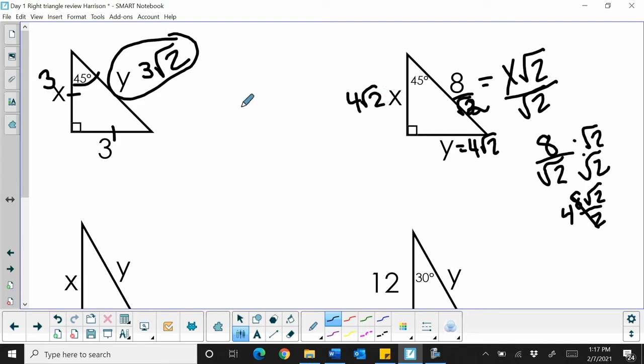And that is your 45-45-90, working forward by multiplying to get the hypotenuse, or working backwards, dividing to get the leg.